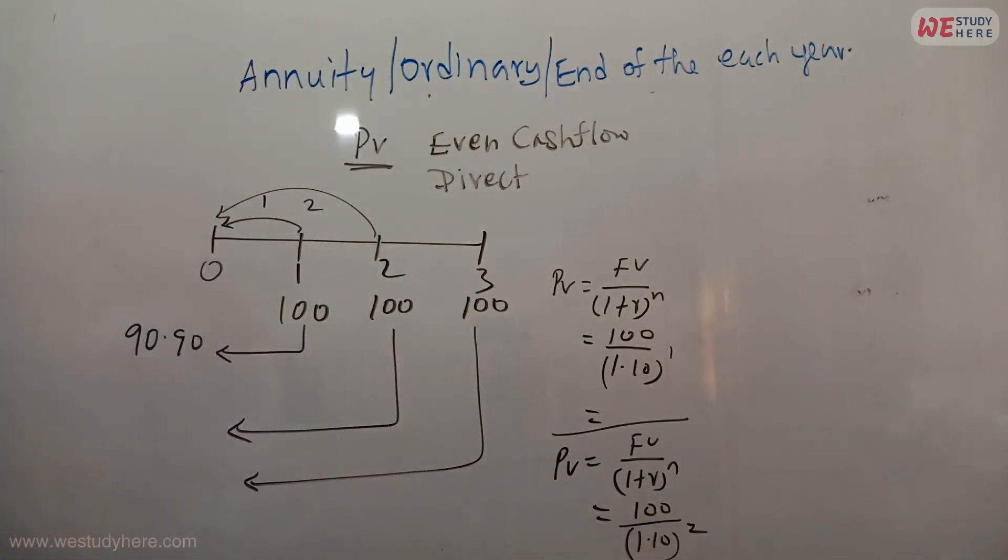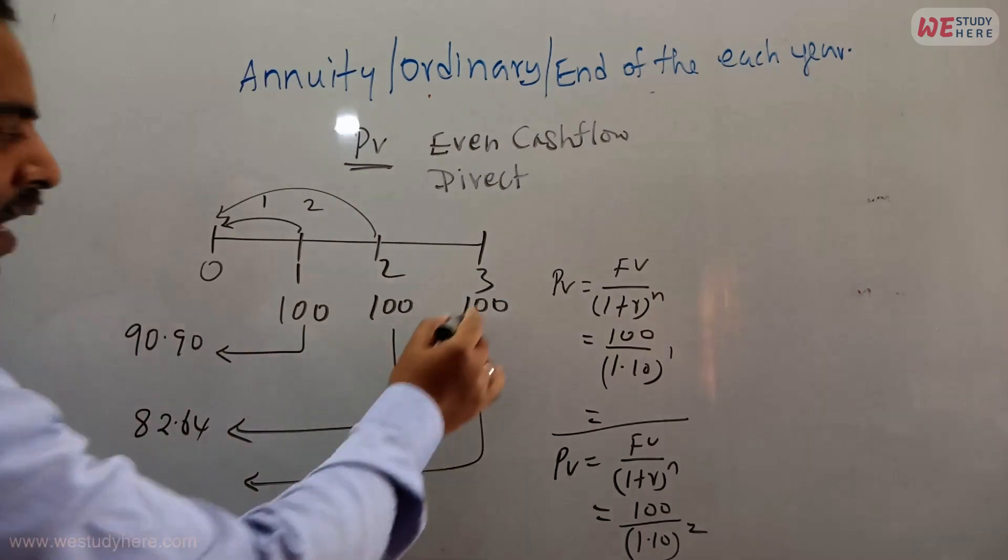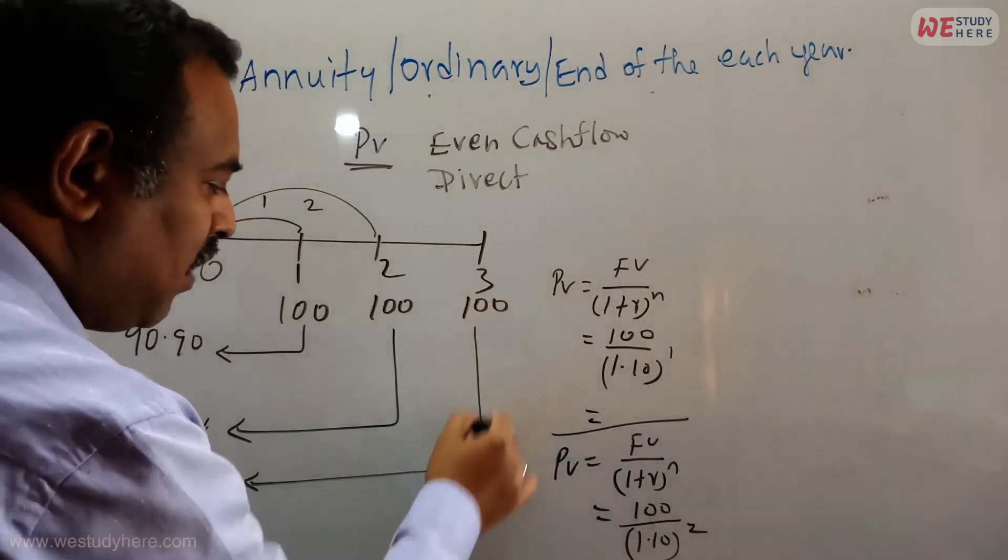Then again you calculate, it will be 82.64. Now what will we do for the third year? For that 100, again you will do for this.